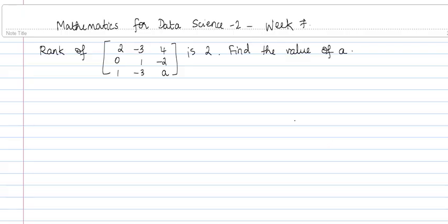Hello everyone. In this video let's solve this problem. The rank of the matrix [2, -3, 4; 0, 1, -2; 1, -3, a] is given to be 2 — find the value of a. The question is to find the value of a such that the rank of this matrix is 2.